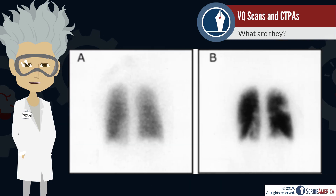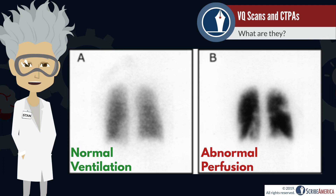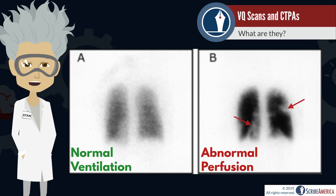Here is an example of the images created from a VQ scan. Image A is the ventilation phase and is considered to be a normal image. Image B is the perfusion phase and this image is abnormal. If the radioactive tracer is building up in a region, we see a bright white area known as a hot spot. In this case the tracer is accumulating due to clots.